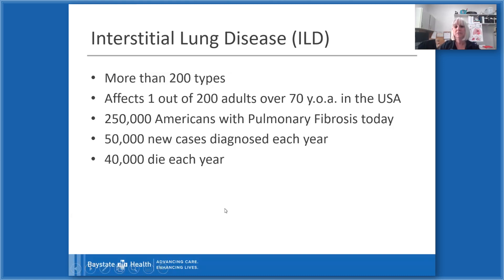Interstitial lung disease encompasses more than 200 types and affects one out of 200 adults over the age of 70 in the United States. There are approximately 250,000 Americans with pulmonary fibrosis today, with 50,000 new cases diagnosed each year, and unfortunately 40,000 people die each year from interstitial lung diseases.